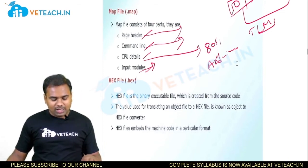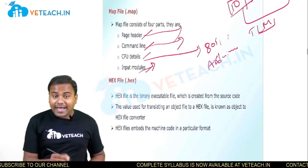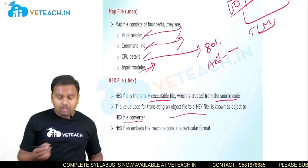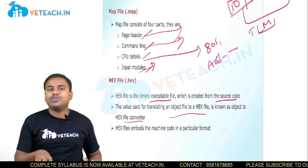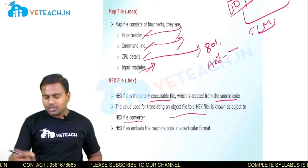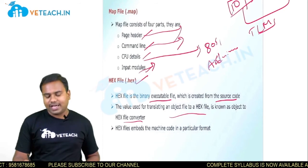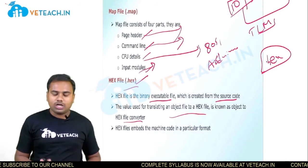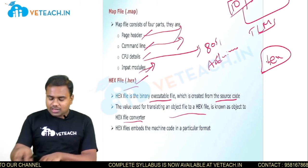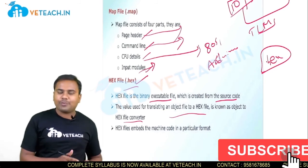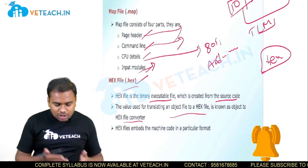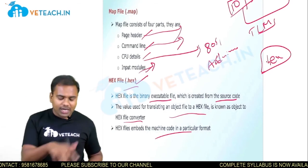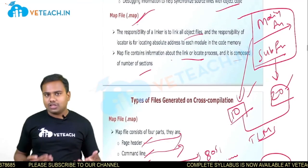The next and most important file is the hex file — dot HEX. It is a binary executable file created from the source code. The conversion used is object-to-hex file conversion. If you are going to dump the program in a simulator or emulator or on the actual hardware, we are going to dump this dot HEX file. The exact cross compilation output — what the machine will understand — is stored in this hex file only. This is about the types of files generated in the cross compilation. Thank you.